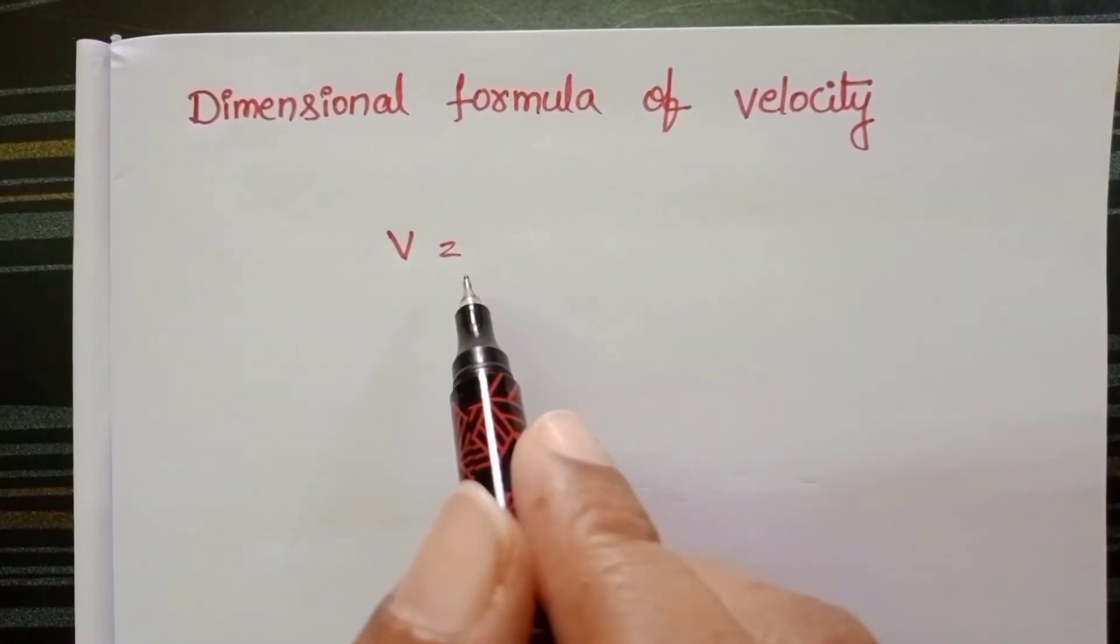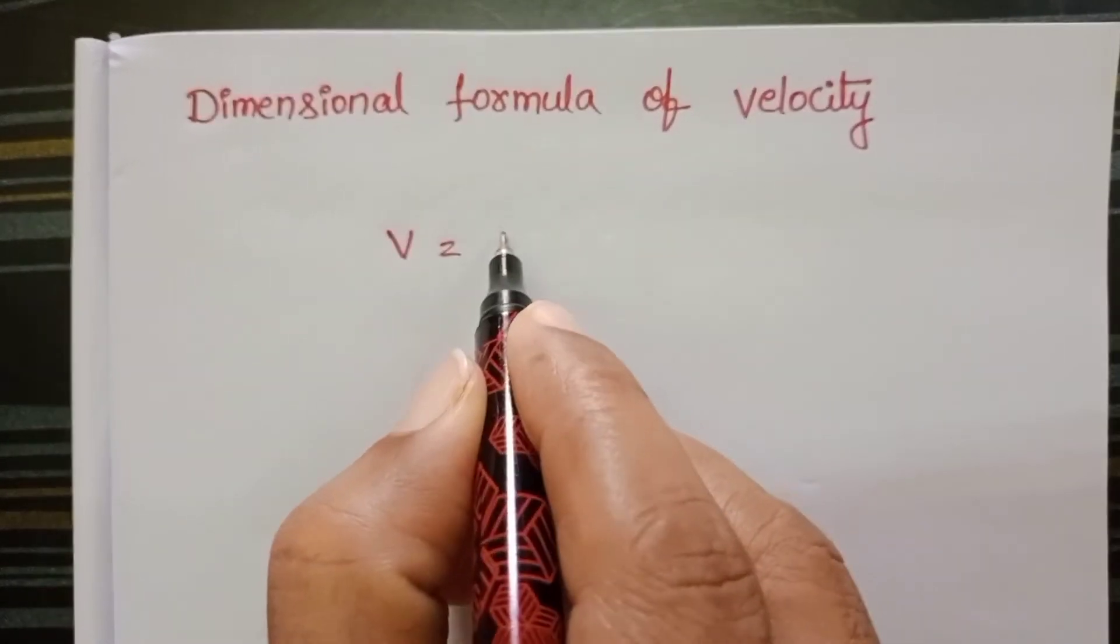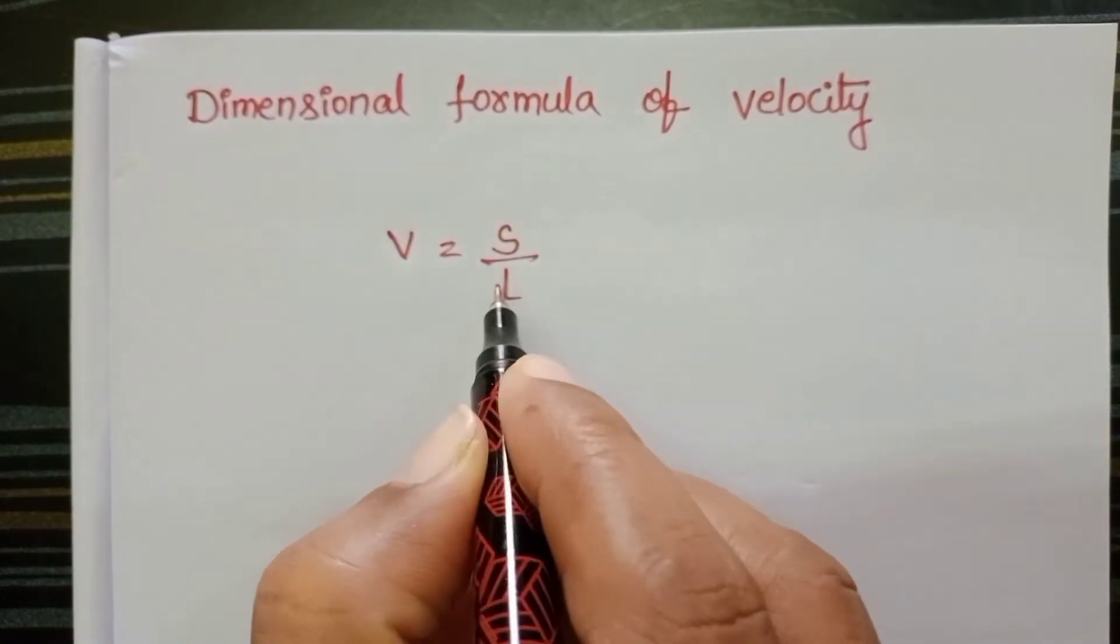Dimensional formula of velocity. Rate of change of displacement is called velocity.